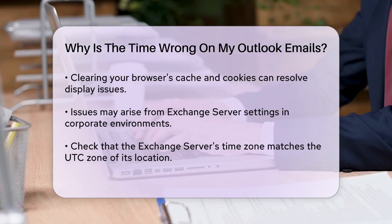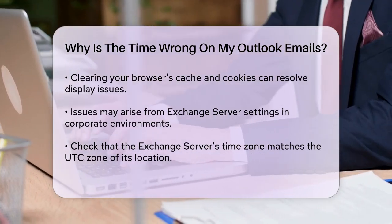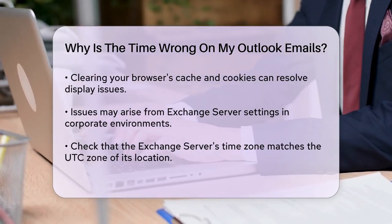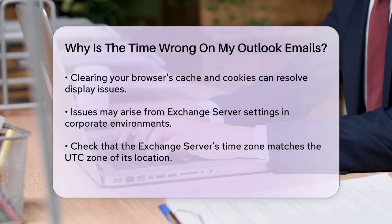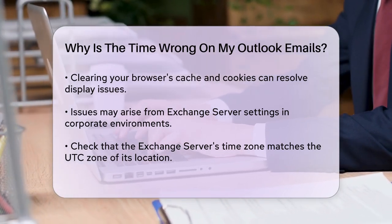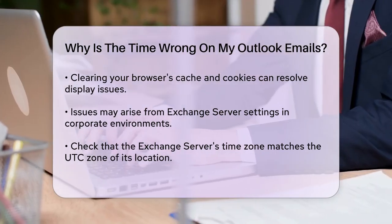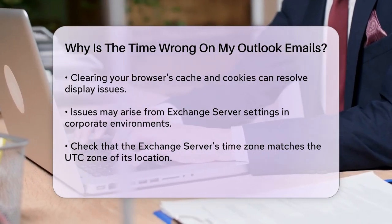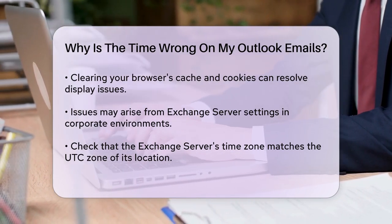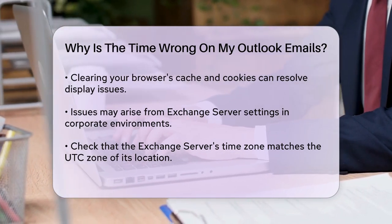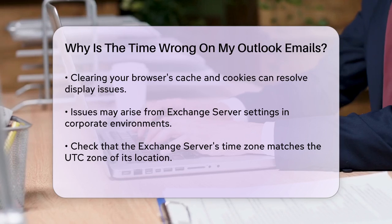The server's time zone settings can affect the timestamps on your emails. For instance, if the server is in a region that follows Daylight Saving Time (DST) but your location does not, this can cause discrepancies. To resolve this, the time zone on the Exchange Server should be set to a region that matches the Coordinated Universal Time (UTC) zone of the country or region where the server is located, and this UTC zone should not follow DST.